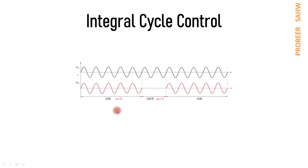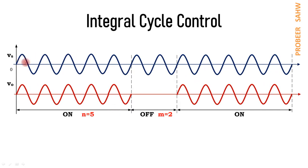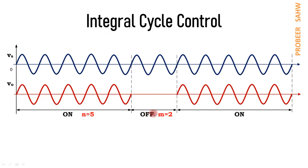In integral cycle control, we connect the supply for a few cycles and disconnect the load for a few cycles. The waveform is shown with the supply voltage in blue — 12 cycles of supply are shown. As an example, the load is connected for 5 cycles and disconnected for 2 cycles. Therefore, output voltage V0 equals Vs for 5 cycles while devices are on, and there is no output for the 2 cycles while devices are off.